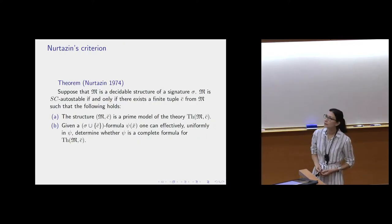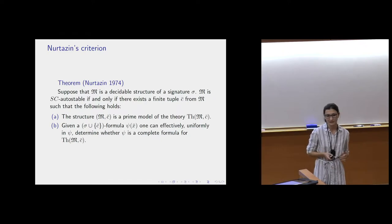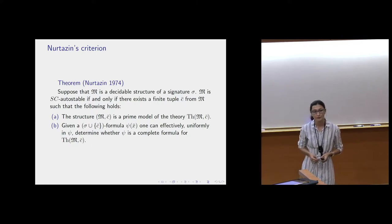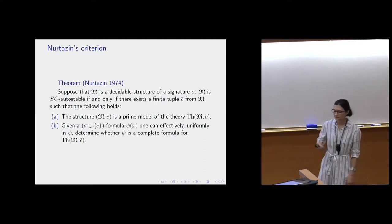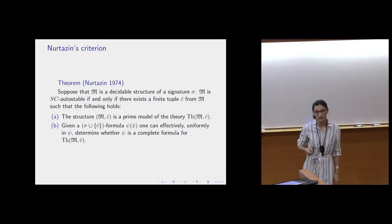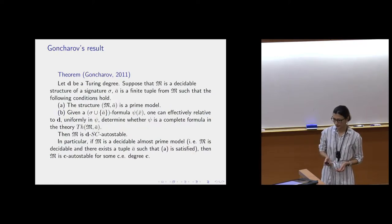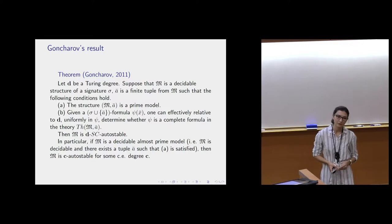This criterion was proved by Nurtazing in 1974. It tells us the following: suppose M is a decidable structure of signature σ. Then M is autostable if and only if there exists a finite tuple of elements from the domain such that the enrichment of the structure with these elements is a prime model of the enriched theory, and given the formula ψ(x̄) of σ augmented with this tuple, one can effectively and uniformly determine whether ψ is a complete formula or not. This is the criterion for C-autostable structures.